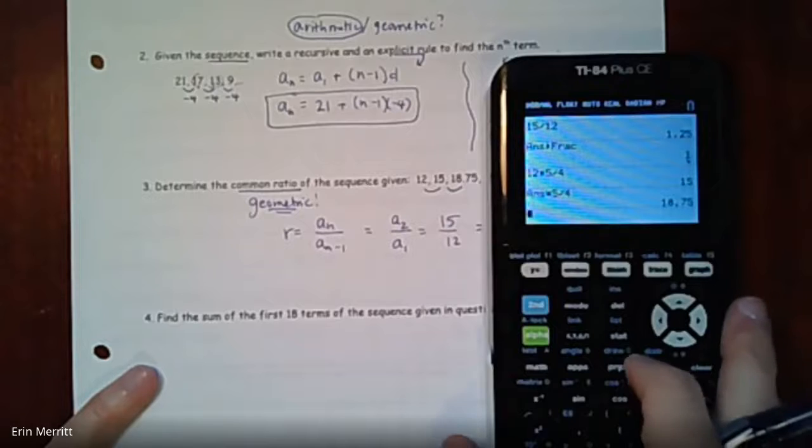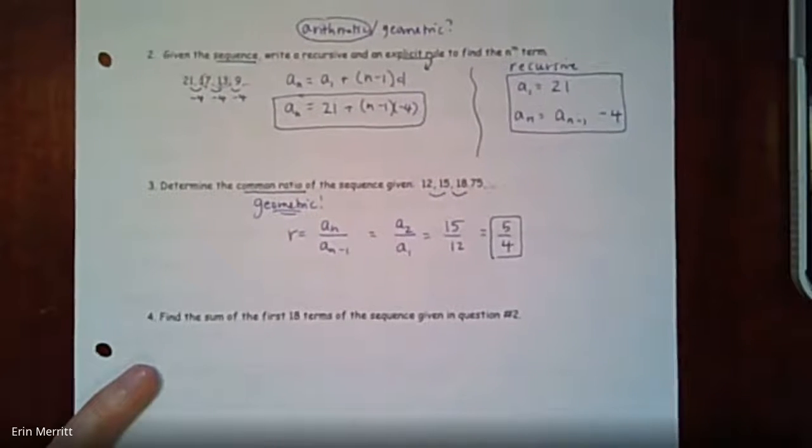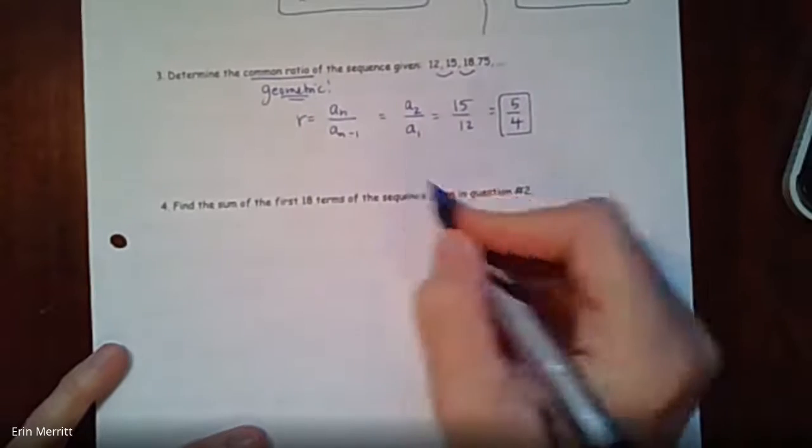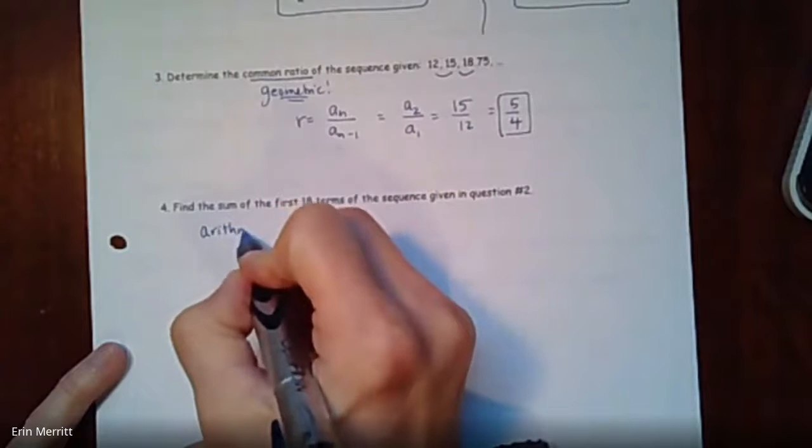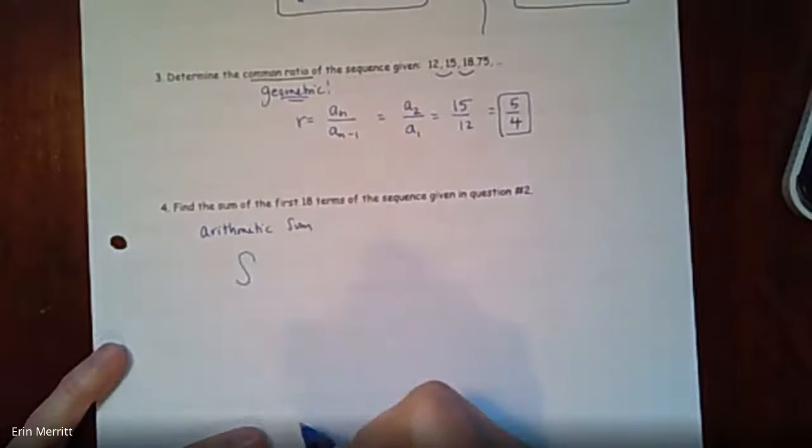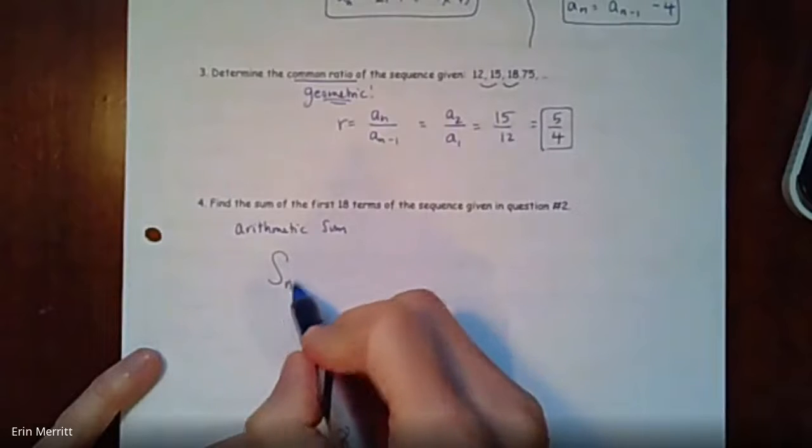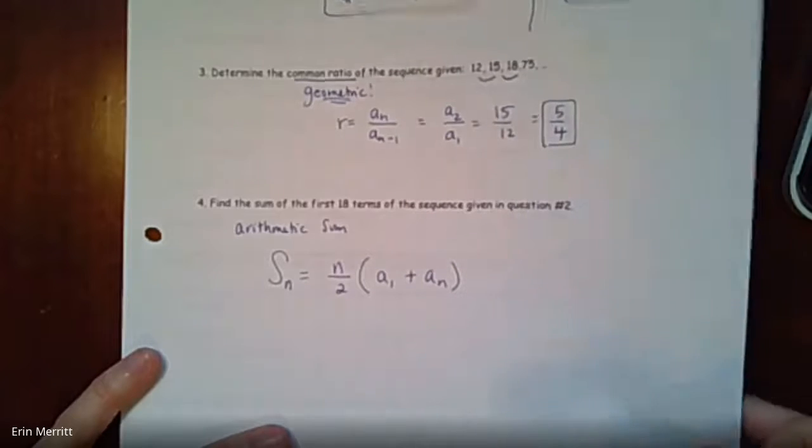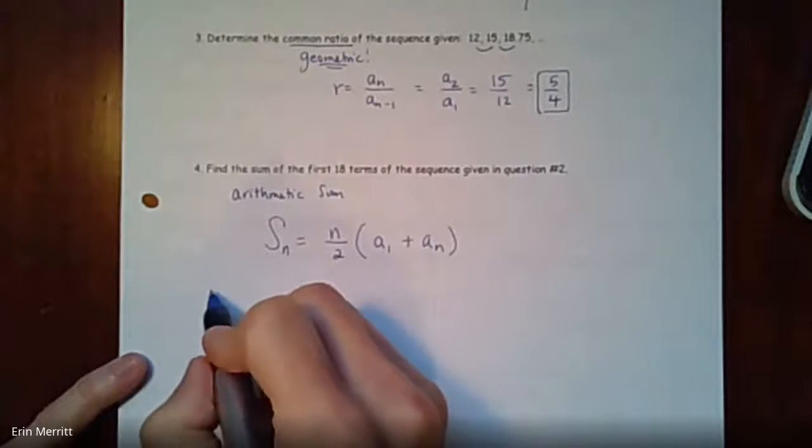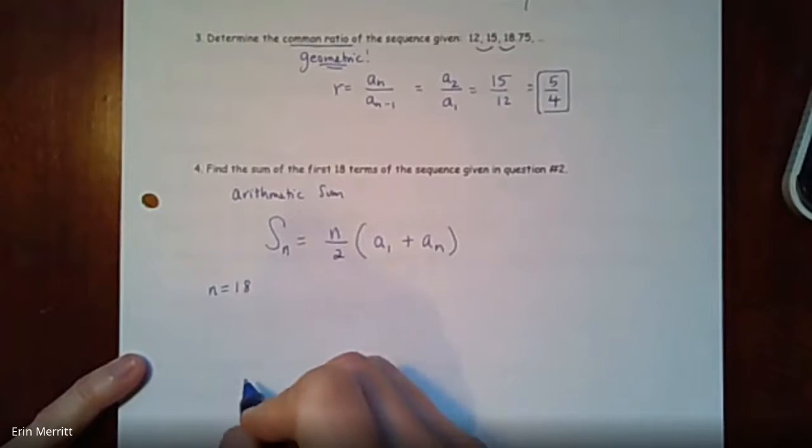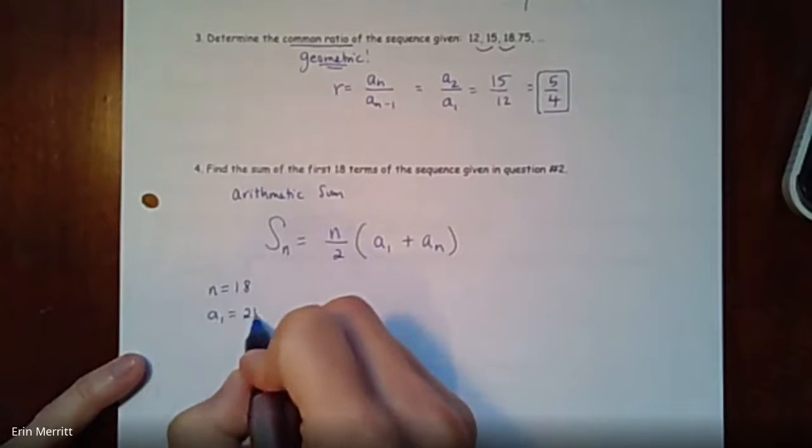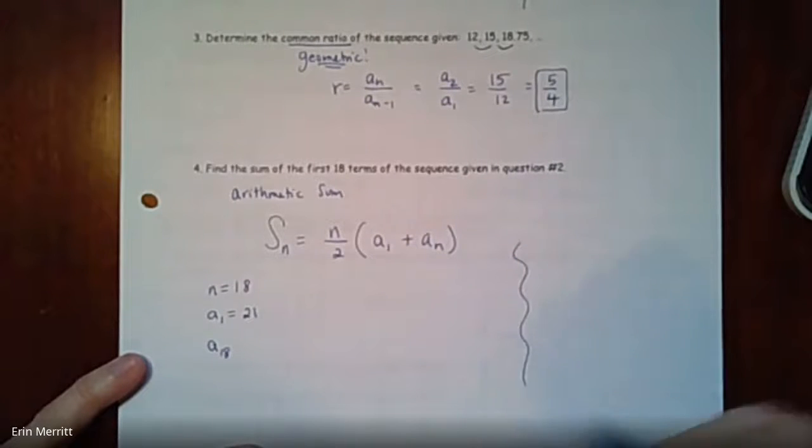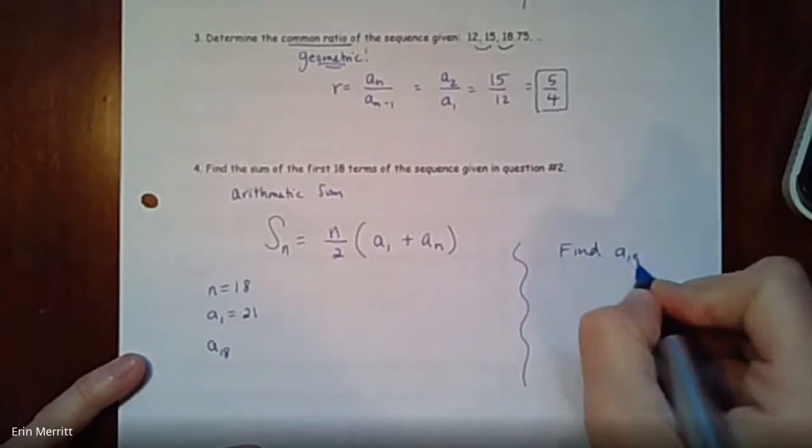Last one now. It says find the sum of the first 18 terms of the sequence given in question 2. Well, question 2 is arithmetic, so you're finding an arithmetic sum. This is the one formula you have to memorize: S_n = n/2 times (a_1 + a_n). From question 2, we know that if we're adding up 18 terms, n would be 18. The first term is 21. We need to find a_18.